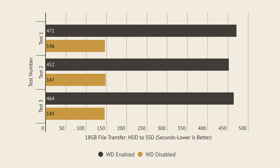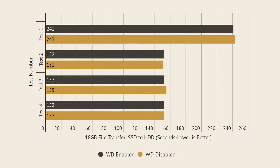Now for file transfers, I copied the same 18GB folder from my secondary hard drive to my main SSD. This was absolutely astonishing — it was 3.2 times quicker to transfer the folder after disabling Windows Defender, saving almost 5.5 minutes in the transfer process. This was just crazy! However, transferring the same folder from my main boot drive to my secondary hard drive saw almost no difference. Actually, it took a little bit longer, but it's still within the margin of error.